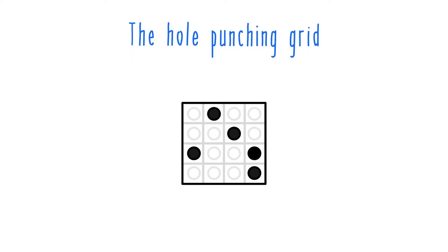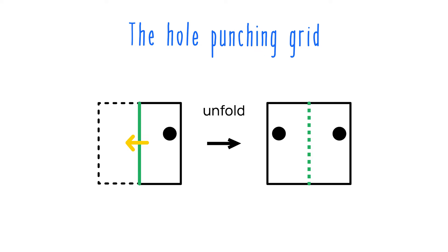For instance, say you have this vertical fold. This hole then gets punched here on the far right of the grid. That means that when you're unfolding it, you'll end up with another hole on the far left. And notice that both of these holes line up with the grid.